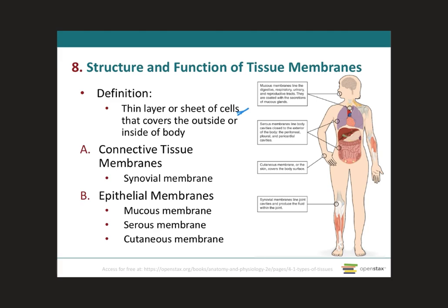There are two basic types of tissue membranes: the connective tissue and the epithelial membranes. The connective tissue membrane is formed solely from connective tissue. These membranes encapsulate or cover organs, such as the kidneys, and they also line movable joints.